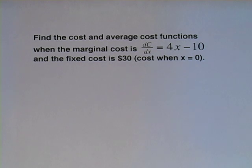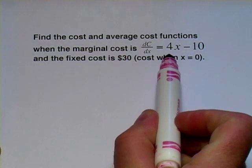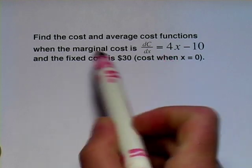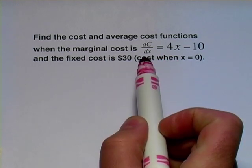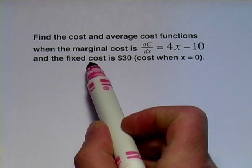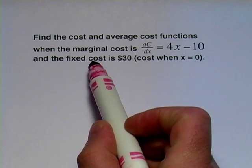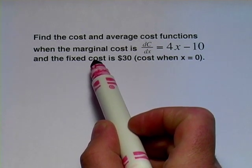In this first one, we're being given a marginal cost function, and we're being asked to find the cost and the average cost functions. And you probably remember that the marginal cost function, and remember that's the cost of the next item to be made,